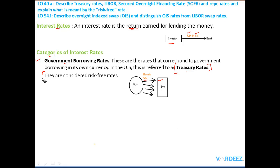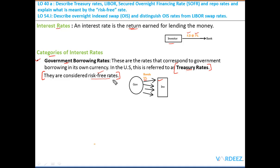Government borrowing rates are considered to be risk-free rates. This is because it is considered highly unlikely that the government of a developed country will actually default on debt issued in its own currency, since a government can always create more currency to meet its obligations. That is the reason why we call these risk-free rates.